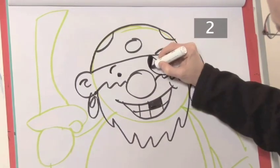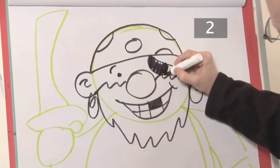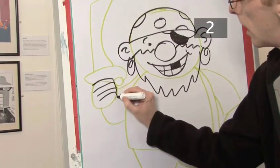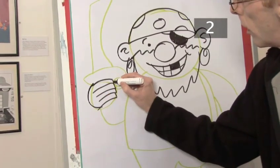An eye patch over one eye should complete his face. Give our happy scoundrel some fingers and thumbs and go over the outline of his cutlass.